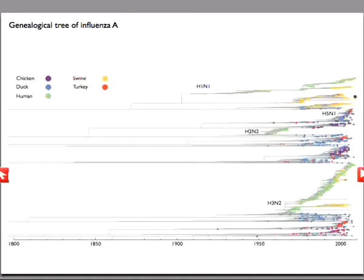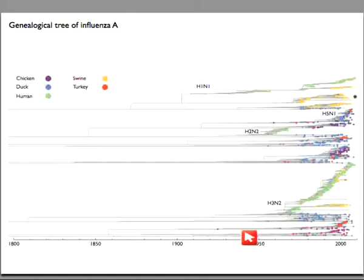Before the swine flu stuff, for the last 30 odd years, H3N2 has been the predominant bad thing we've been dealing with. More people get sick with it, and it makes them sicker than H1N1. So I'll focus exclusively on this H3N2 lineage and its evolution.